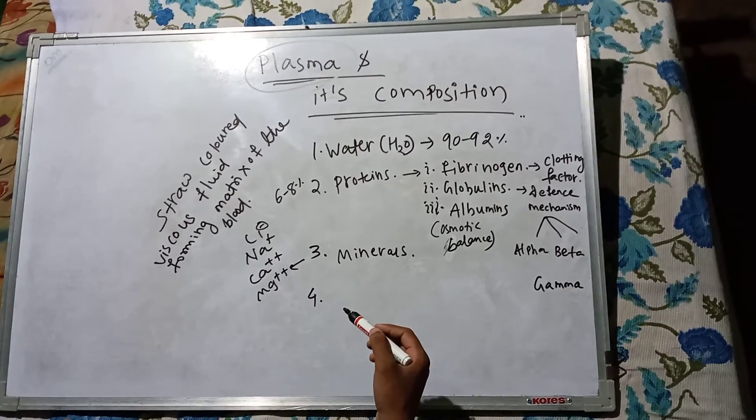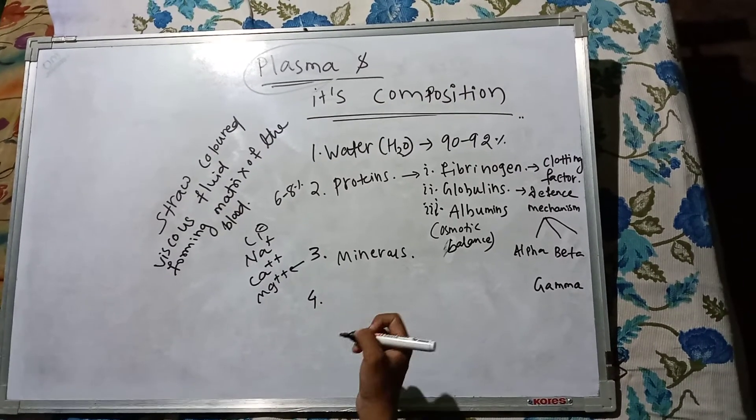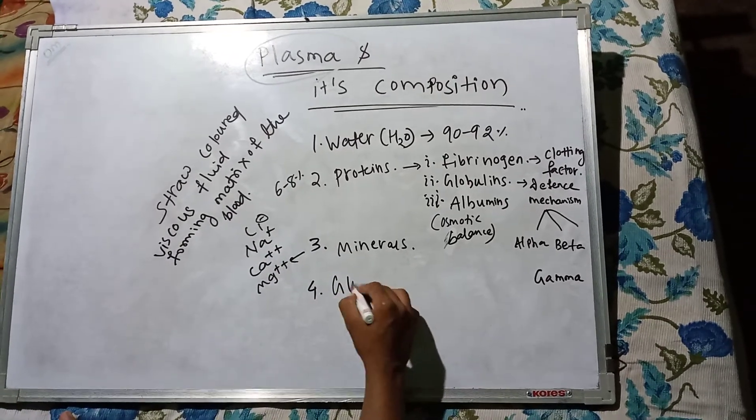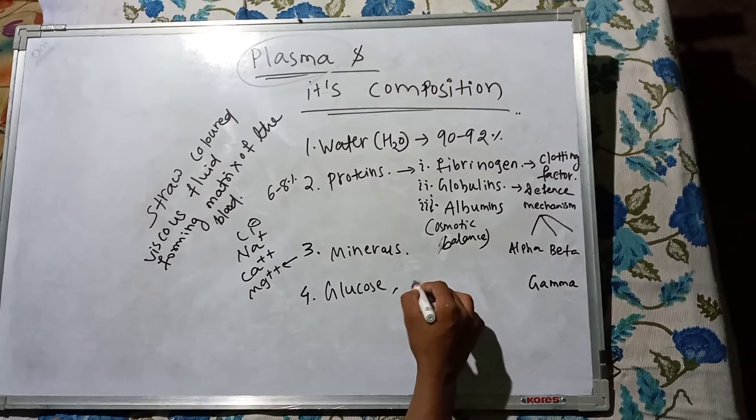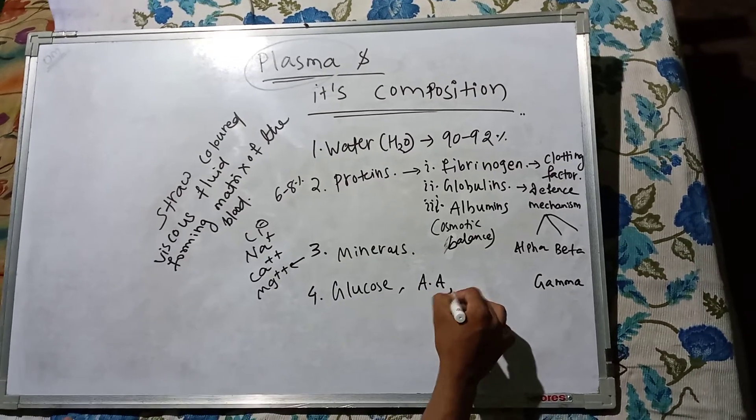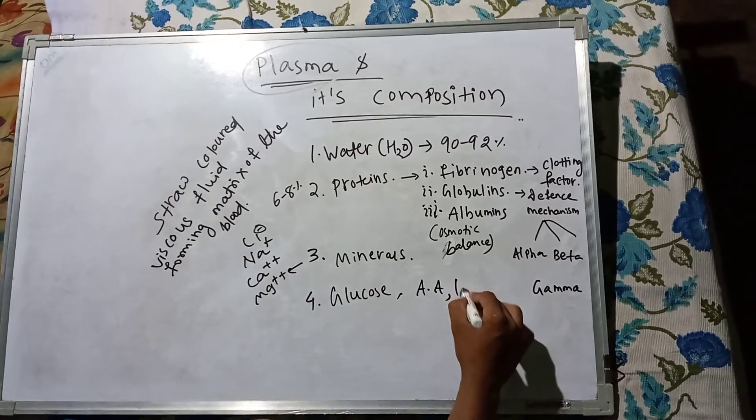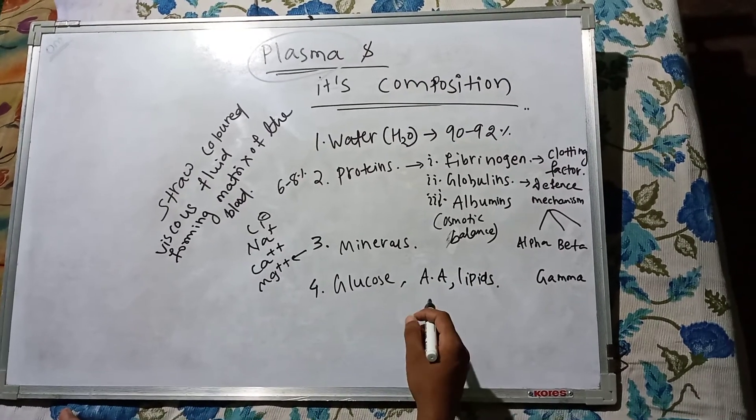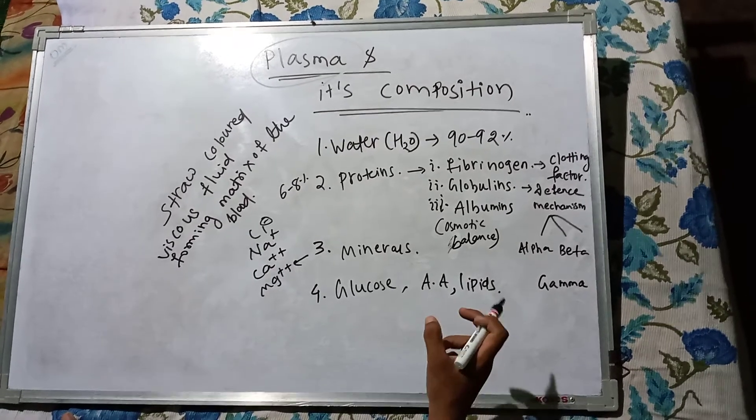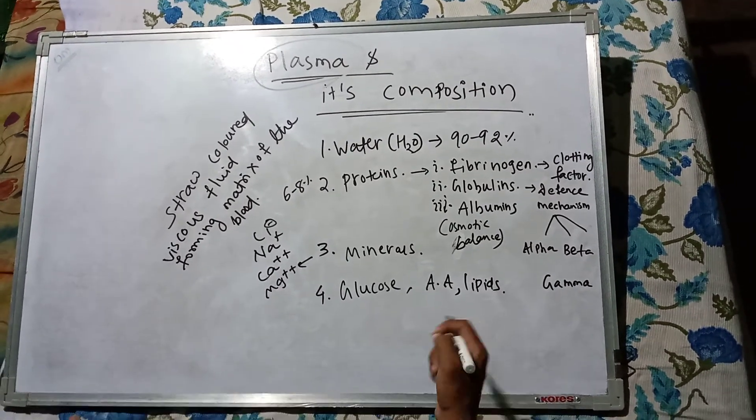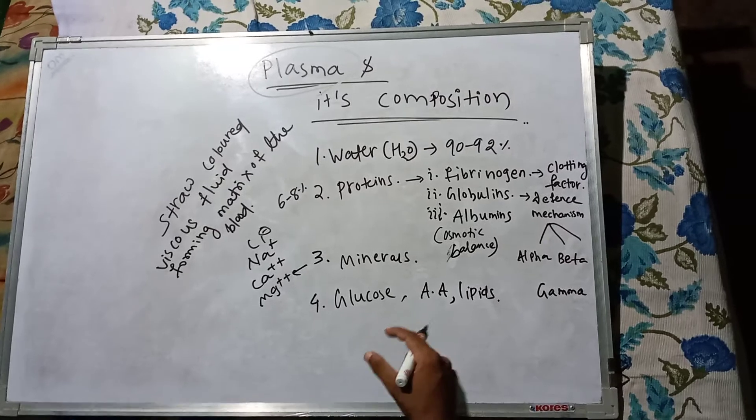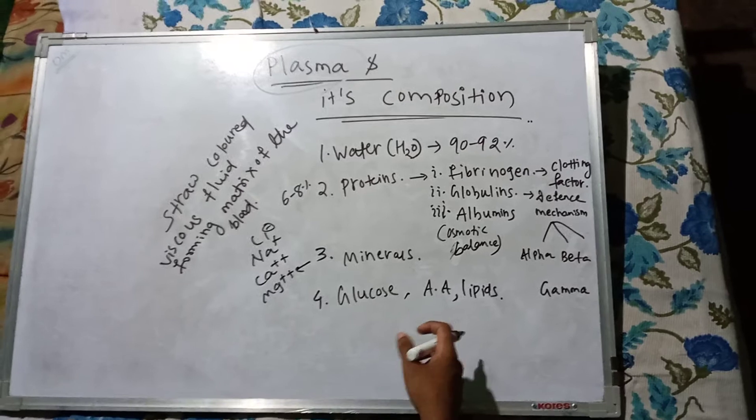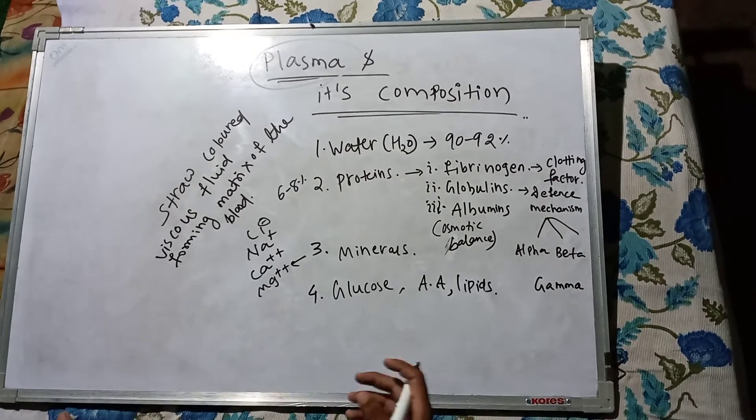The fourth and last composition of plasma is glucose, amino acids, and lipids. These are also present in the plasma as they are always in transit in the body. They are carried by the plasma from one place to another, and these substances enter and leave the plasma at regular intervals.